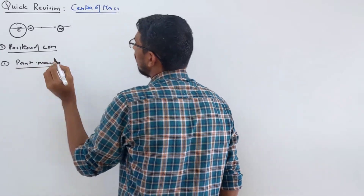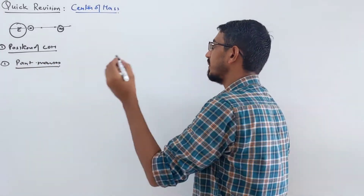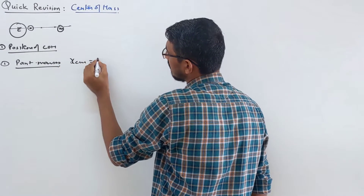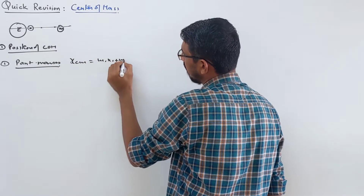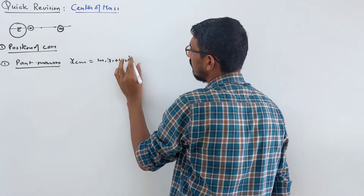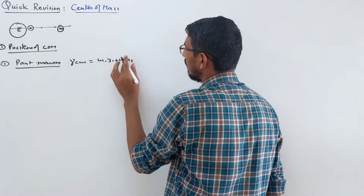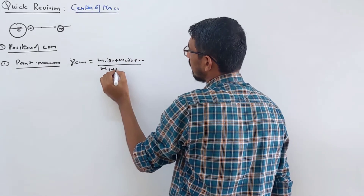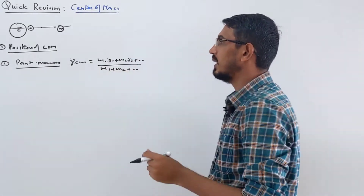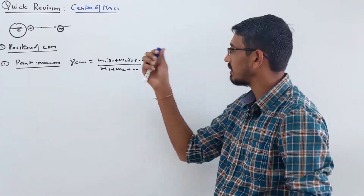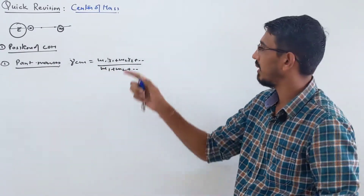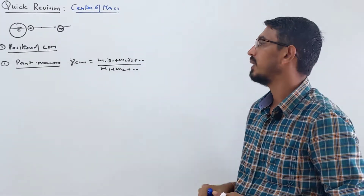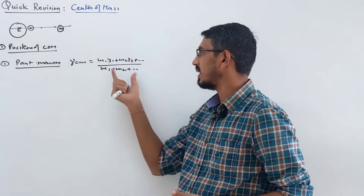For point masses, we have a simple formula: the position of center of mass is given by RCM = (m1·r1 + m2·r2 + ...) / (m1 + m2 + ...). You can find the x-coordinate by putting x values like m1·x1, m2·x2, divided by total mass. Then find y-coordinate by putting m1·y1, m2·y2, and so on. This is the direct formula for point masses.